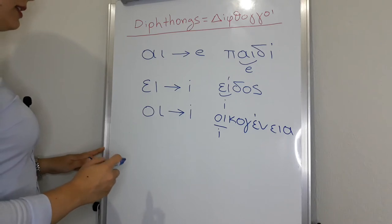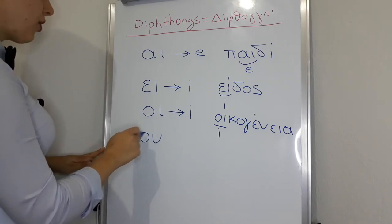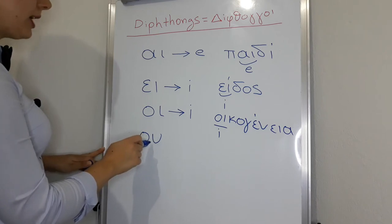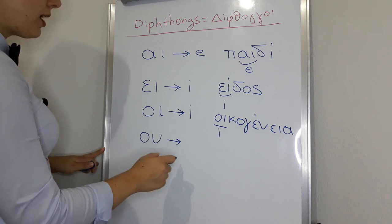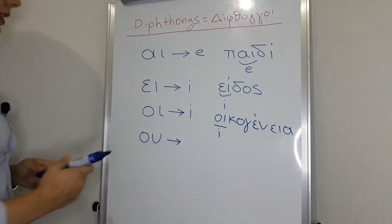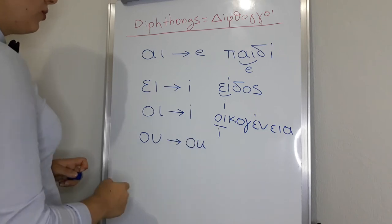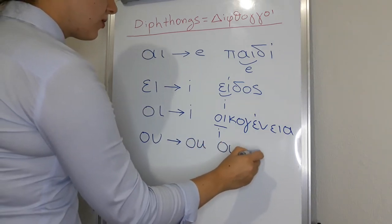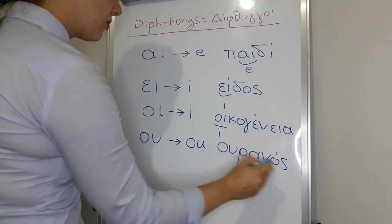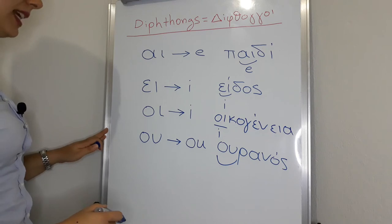Next one is the diphthong u, with omikron and upsilon together. It is pronounced u, like this one in English. U. Ouranos. Sky in English.